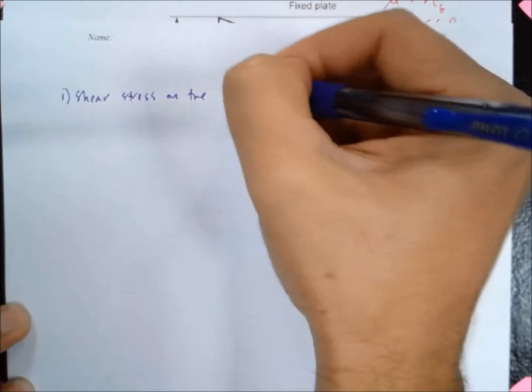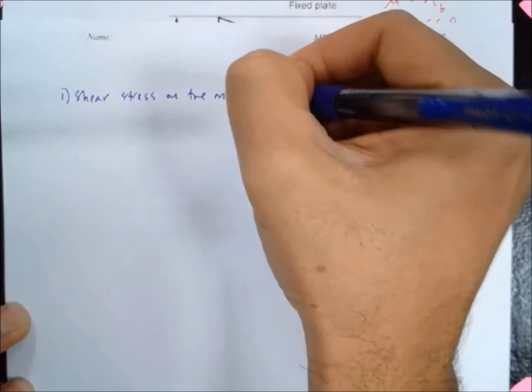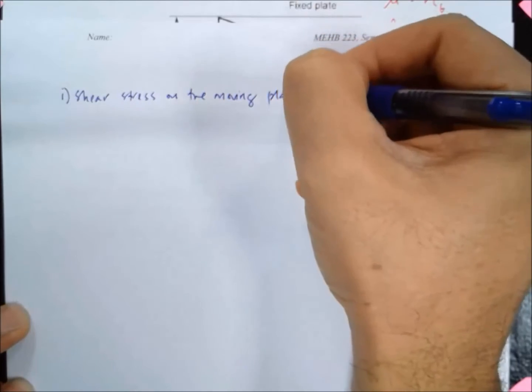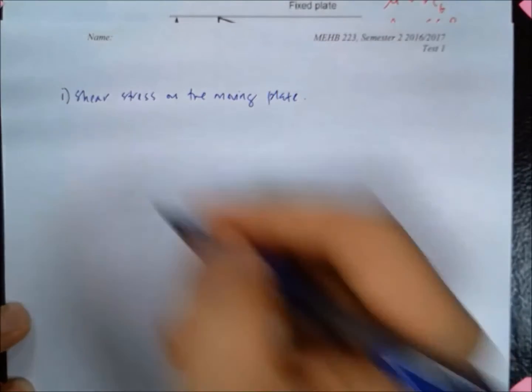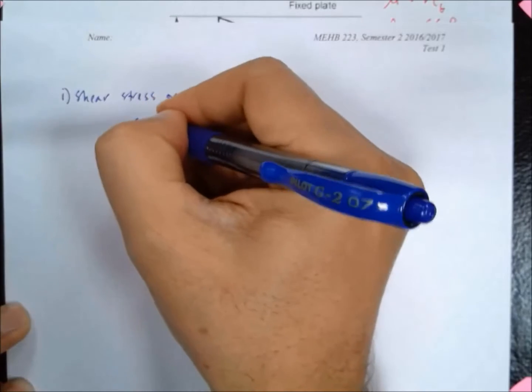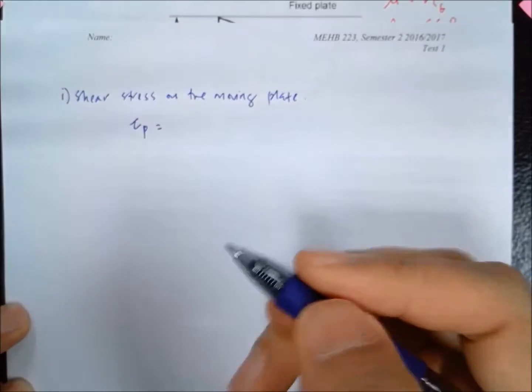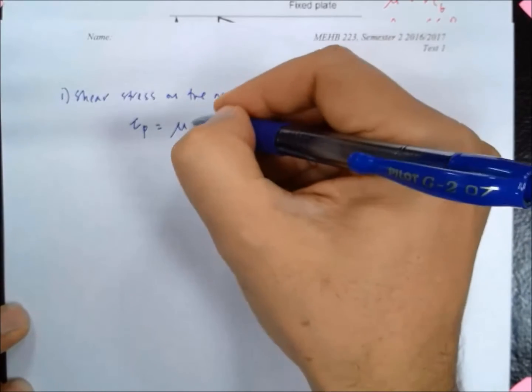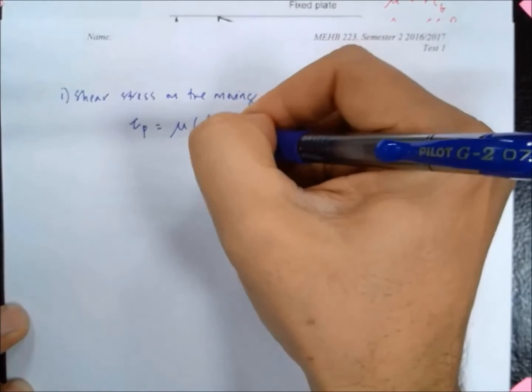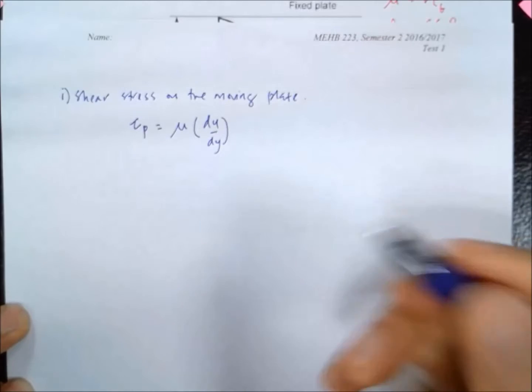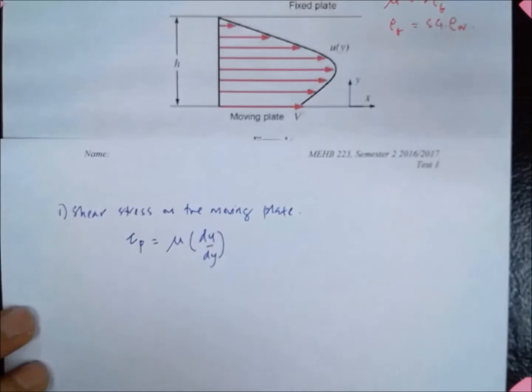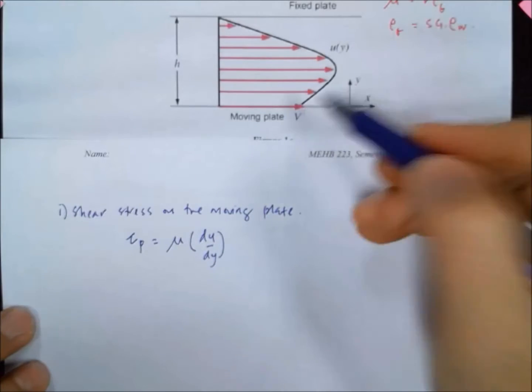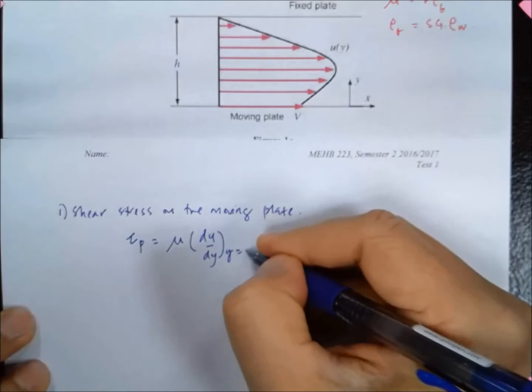The first part we are asked to calculate is the shear stress on the moving plate. The shear stress on the plate by Newton's laws of viscosity is given by mu du/dy, and this is actually at y equal to 0.